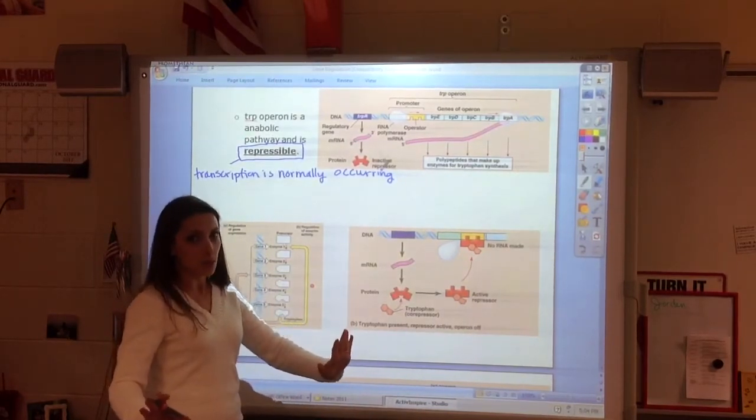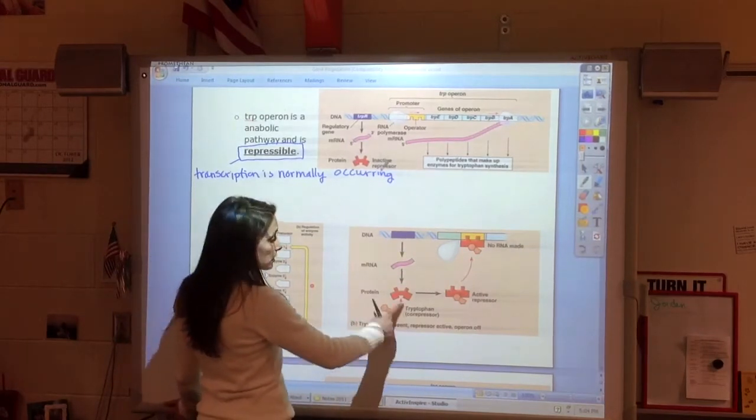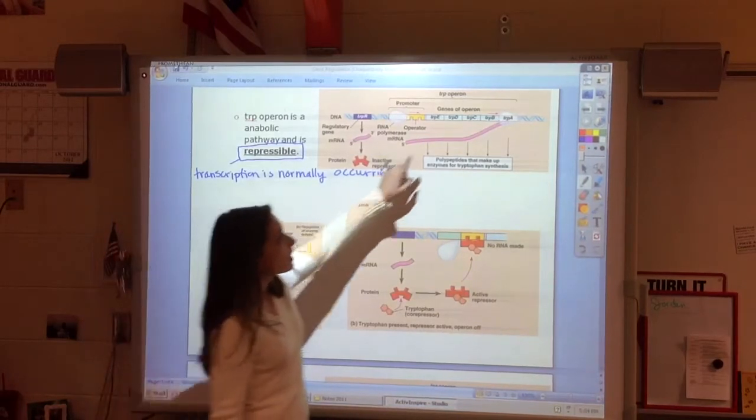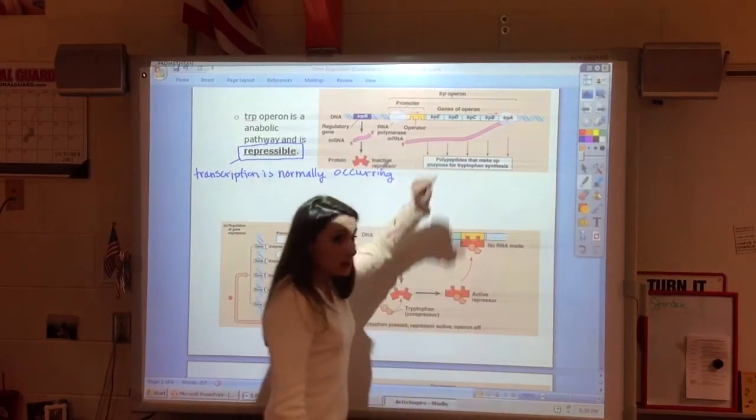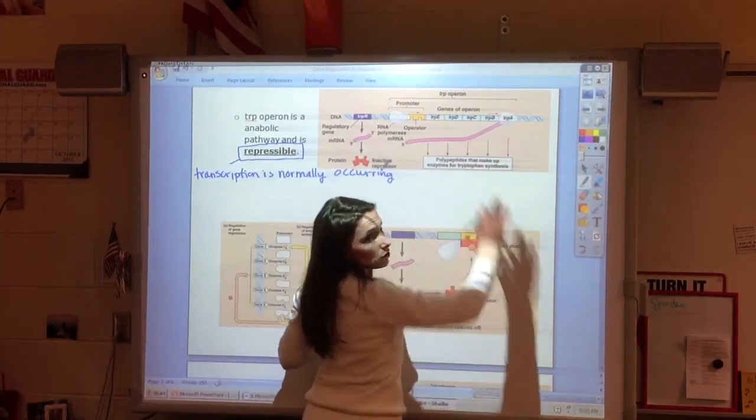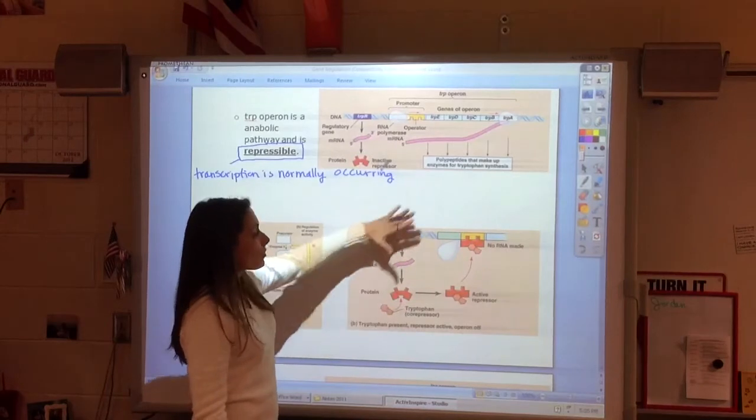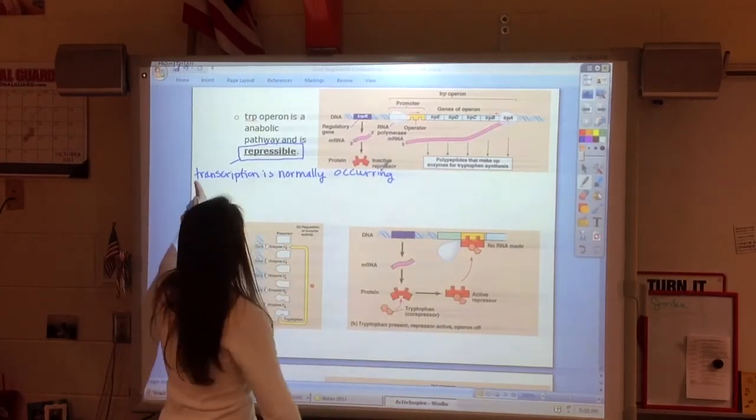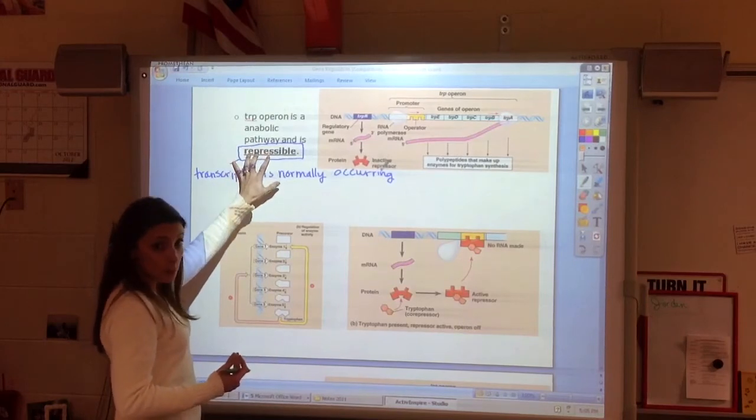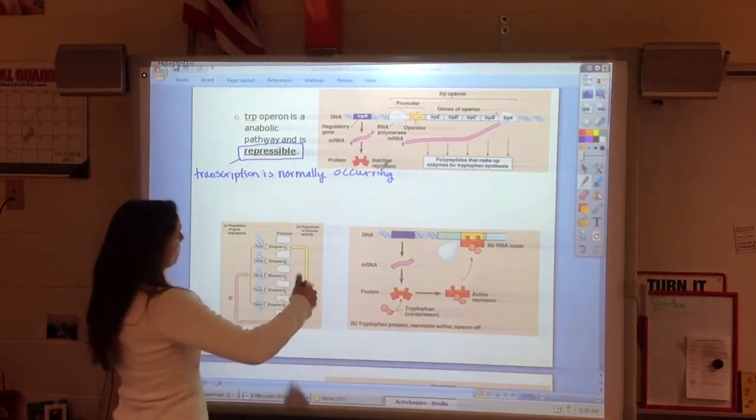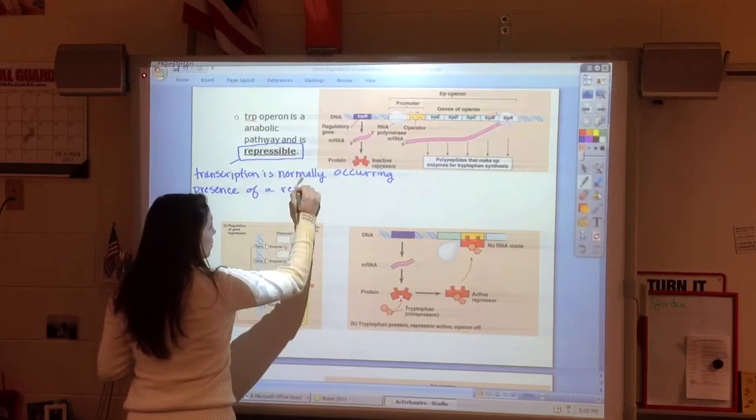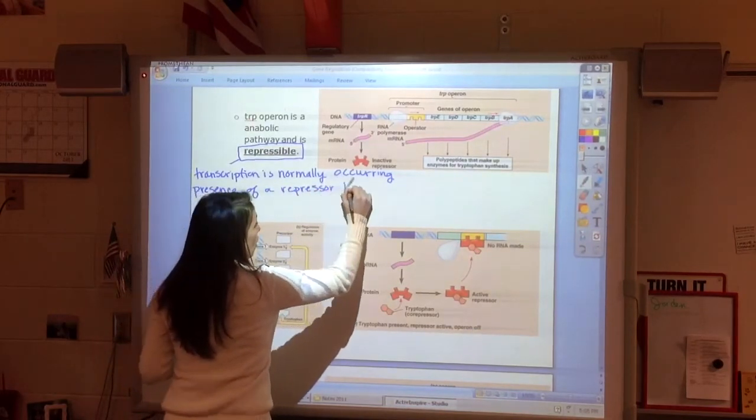If I have enough, don't make any more. Tryptophan is actually the product of these genes. I have to make these five enzymes A, B, C, D, E, and then I can make tryptophan. If I have plenty of tryptophan, I don't want to waste my time doing all of this. So tryptophan will repress transcription. Normally, we are making tryptophan. That's kind of in a repressible operon, we are normally functioning.